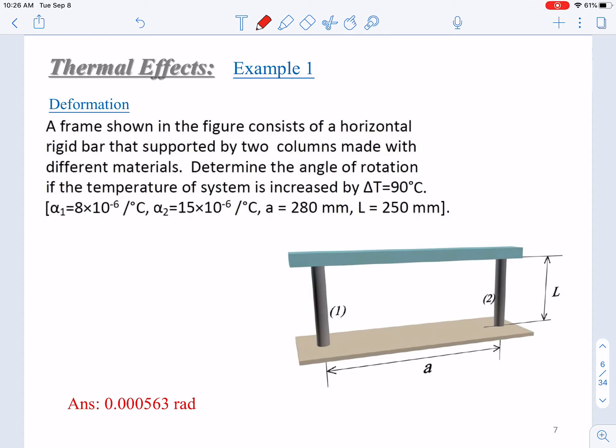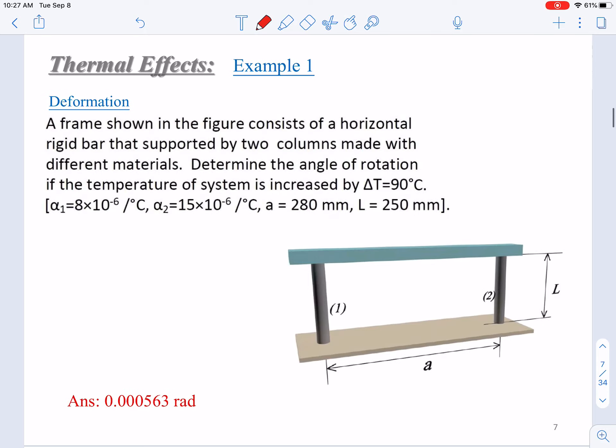Example 1 is a direct application of the equations to check the deformation of a structure. The frame shown here consists of a horizontal rigid bar that is supported by two columns, column 1 and column 2.